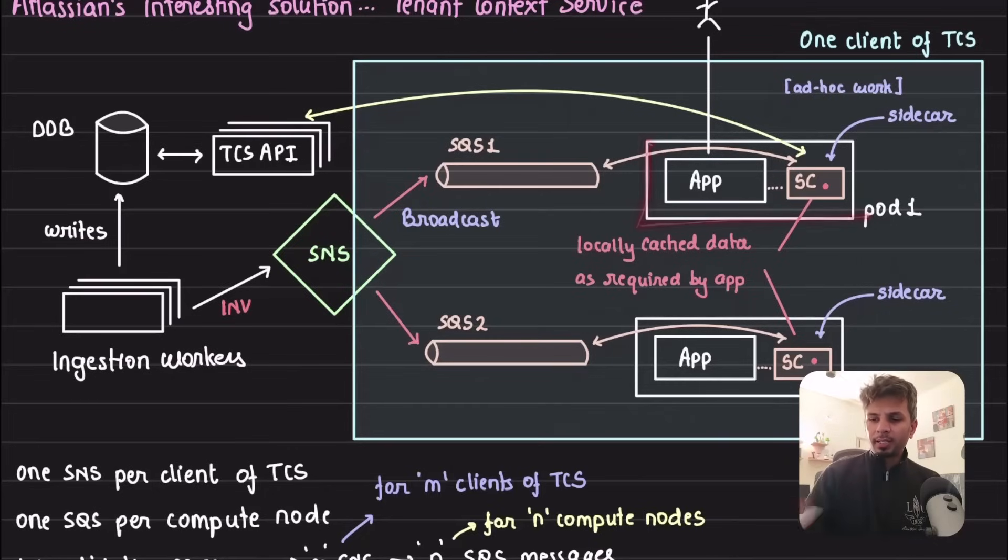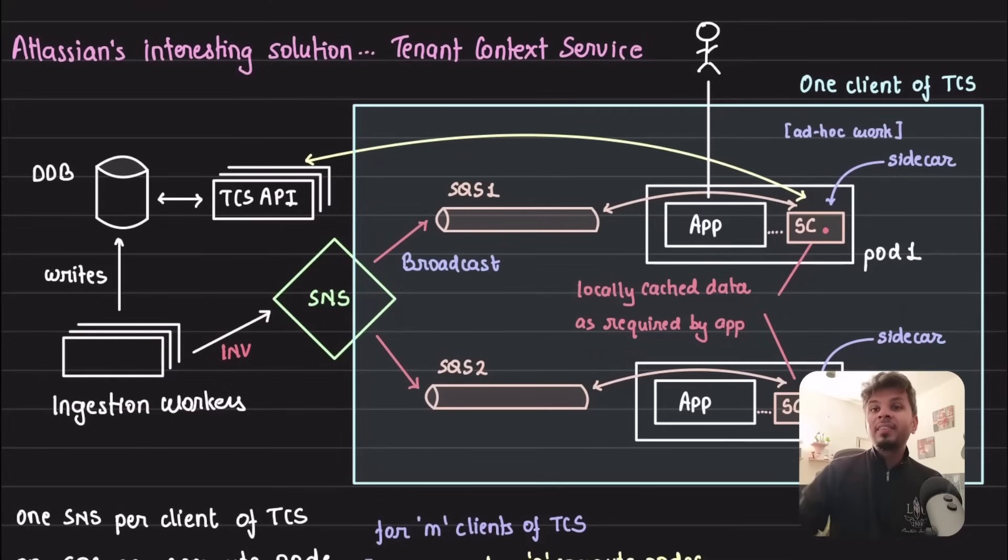Now what are these clients? This entire blue box that you see is one client of TCS; there will be multiple such clients. Each client is a consumer of TCS. The client would have its own set of customers and some application using TCS data. This is typically one pod or one server in which you have a sidecar and your main application. The sidecar is the one interacting with the TCS API to get the data. Your server directly talks to sidecar to access the data quickly.